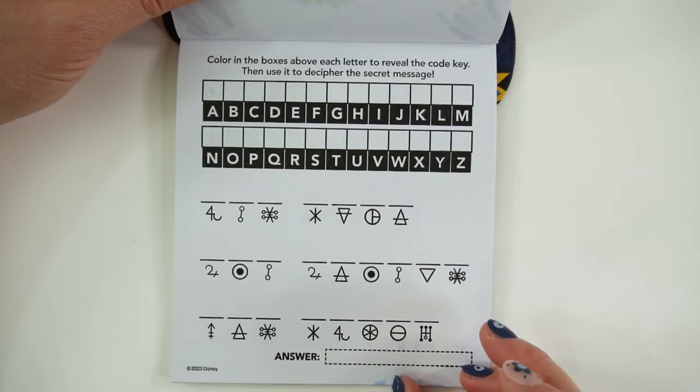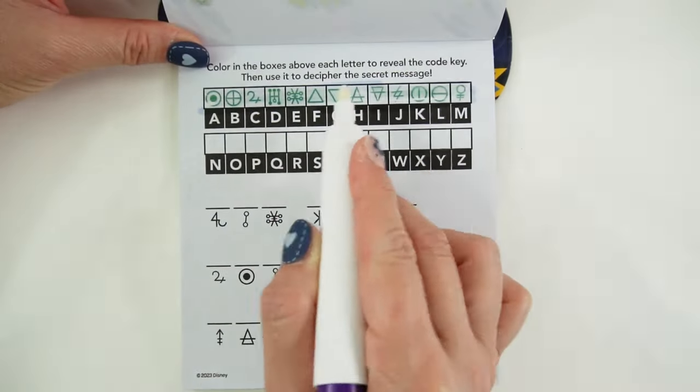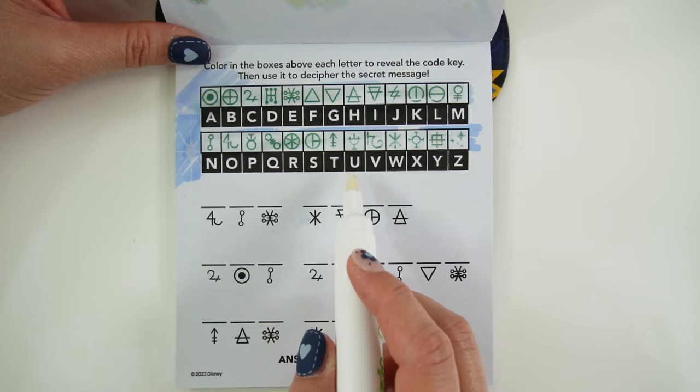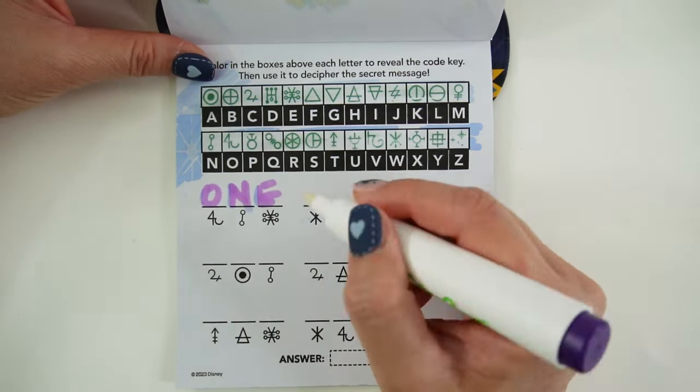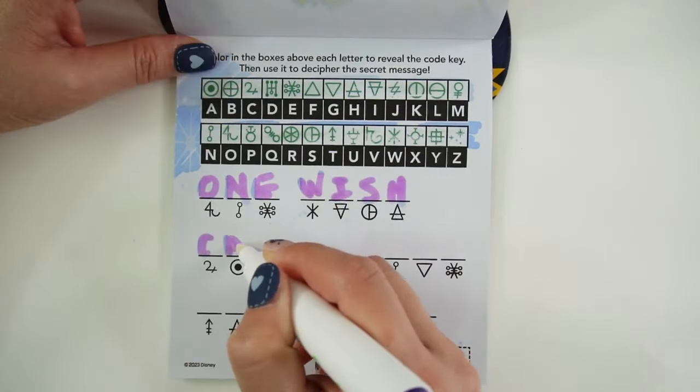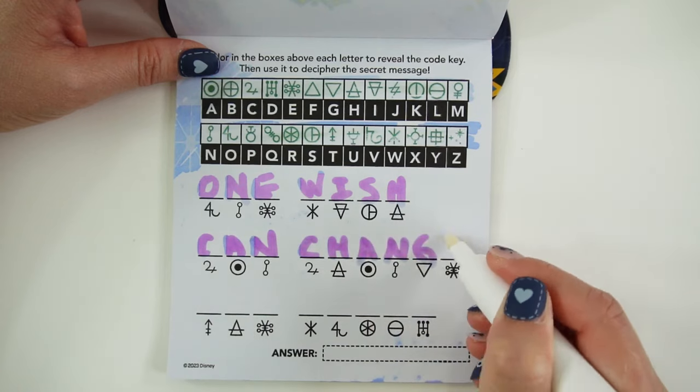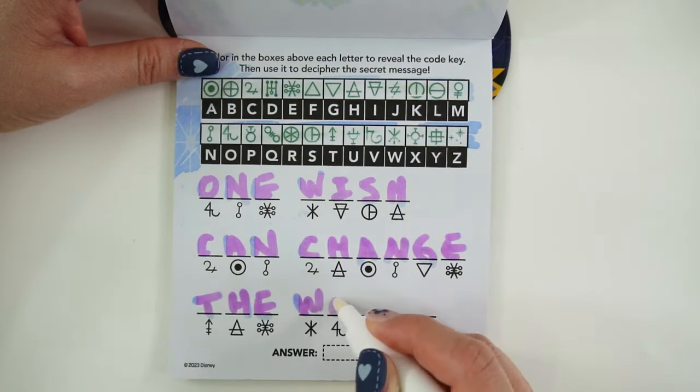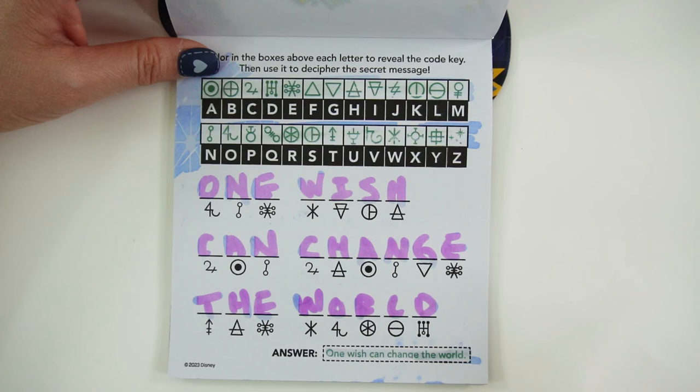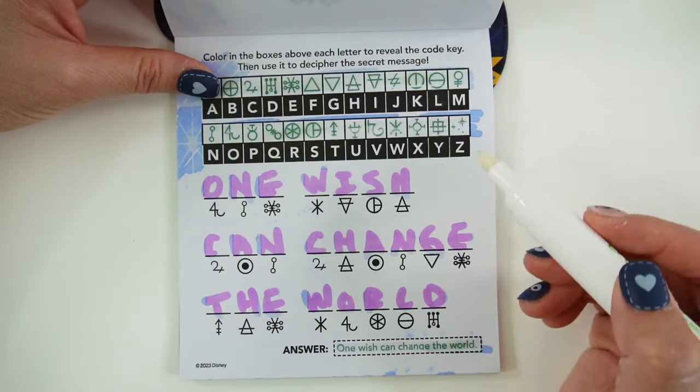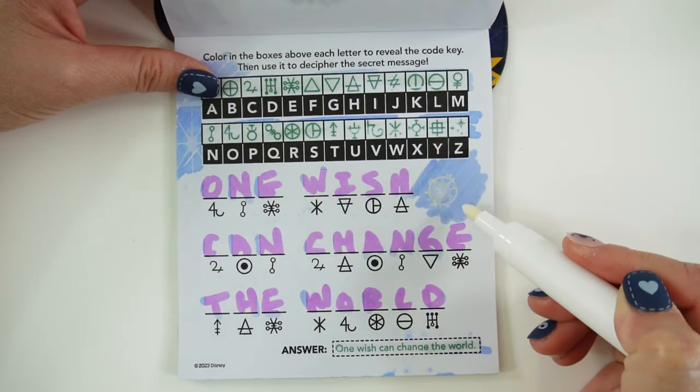Color in the boxes above each letter to reveal the code key. Then use it to decipher the secret message. Here's our code key. One wish can change the world. Let's look for the wish. It's right here.